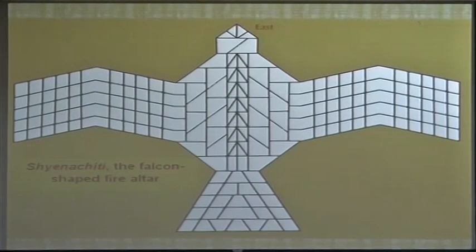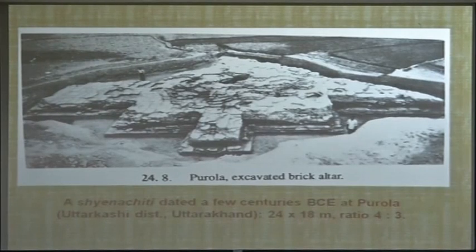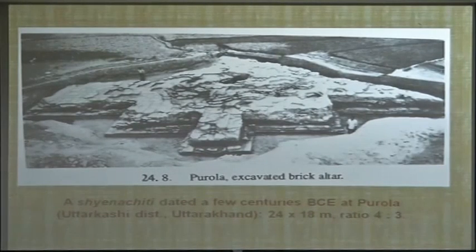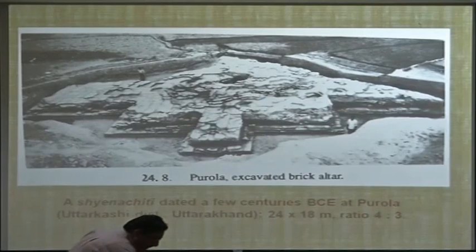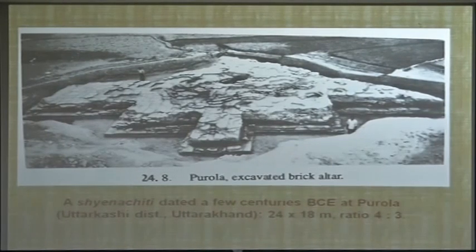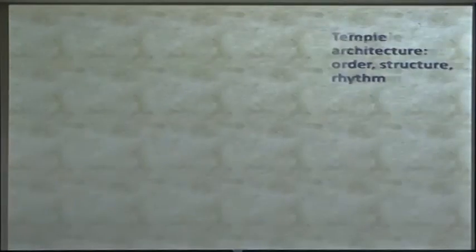This is really the birth of geometry in India, which classical mathematicians would amplify about a thousand years later. We have one piece of physical evidence from Utarkashi in Uttarakhand, where a huge altar was excavated at Purola. This altar measures 24 by 18 meters — about twice as large as what the Shulva Sutras prescribe — showing that a falcon altar was actually constructed. Its ratio is exactly 4 to 3, so there is always an auspicious proportion at work.